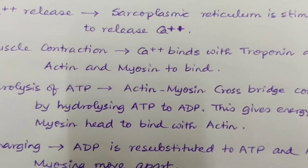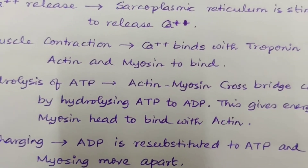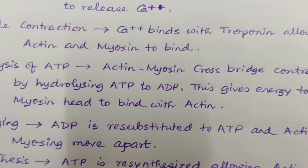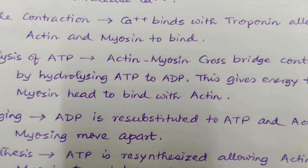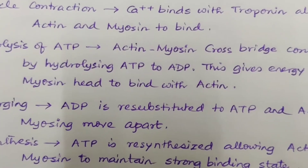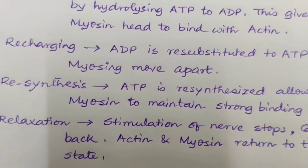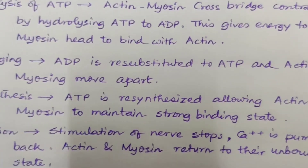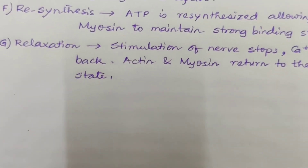Stage 3 is muscle contraction — the calcium ions released bind with the troponin protein, allowing actin and myosin to bind together. Stage 4 is hydrolysis of ATP — actin and myosin cross bridges contract by hydrolyzing ATP to ADP, giving energy to the myosin head to bind with actin. Next is recharging — ADP is regenerated to ATP and actin and myosin move apart.